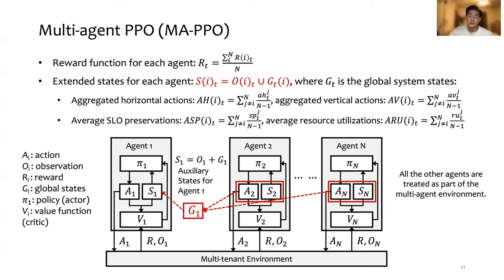G_t includes the aggregated horizontal actions and vertical actions. These represent the collective action of all the other agents in the environment.